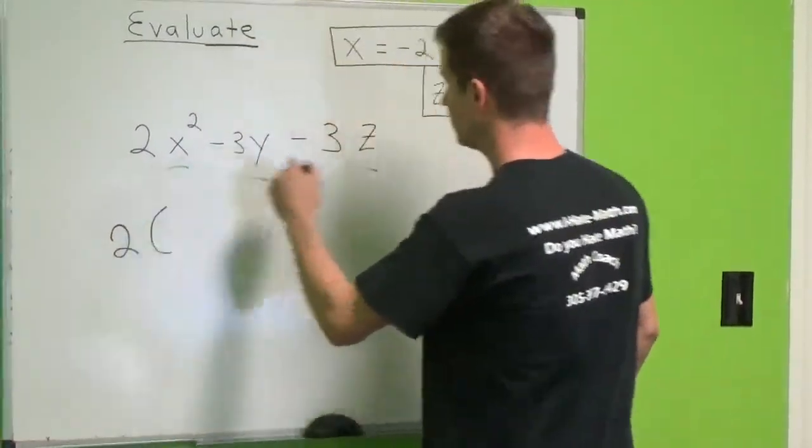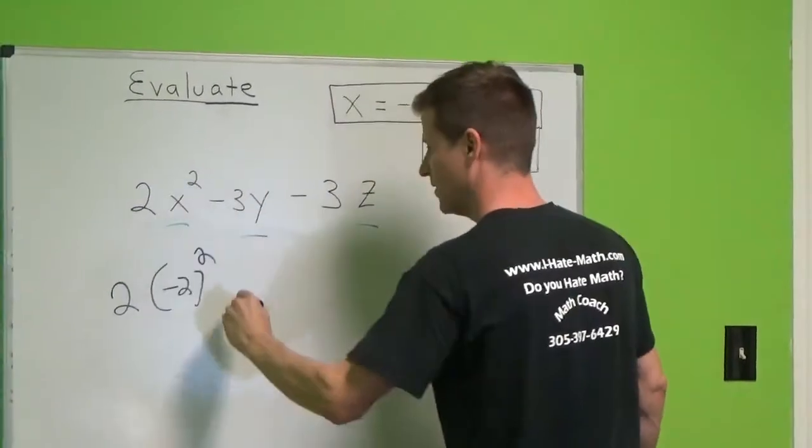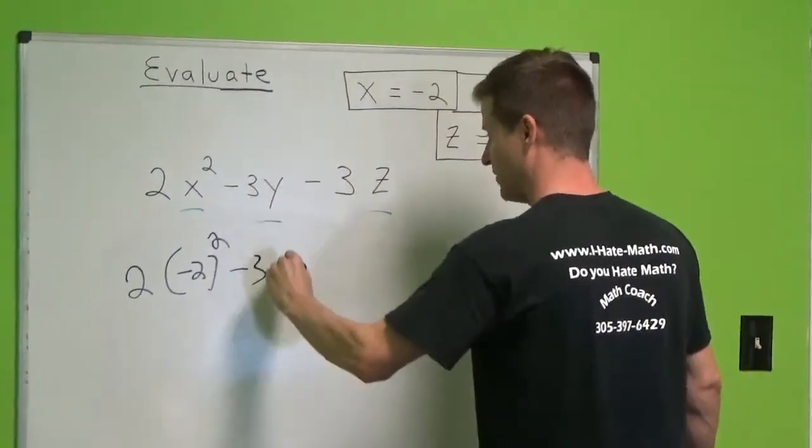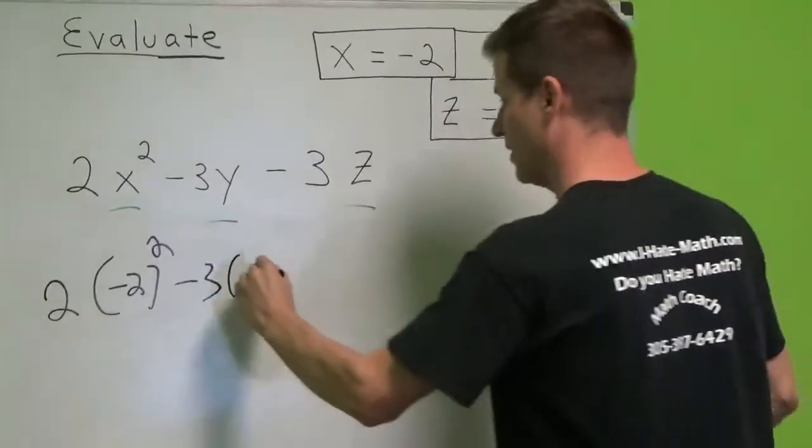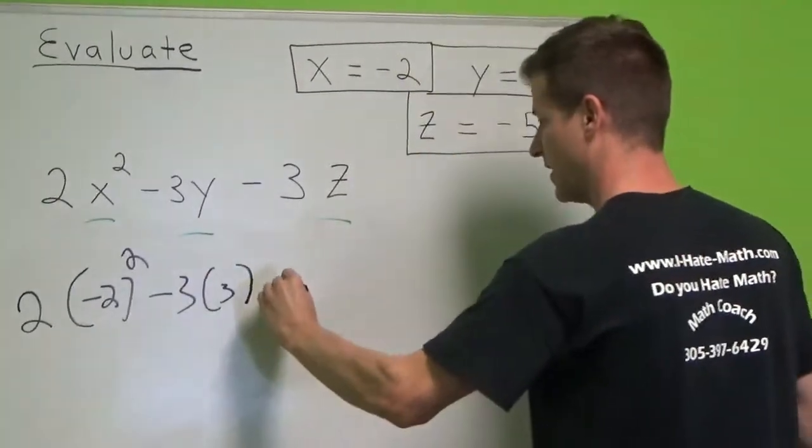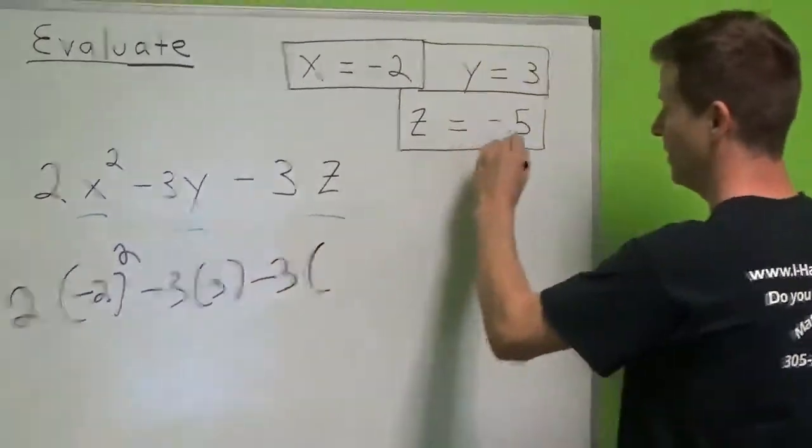So, 2, parentheses, negative 2 to the second, negative 3 in parentheses for y would be what? 3. Bring down the negative 3. z is what? Negative 5.